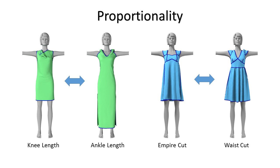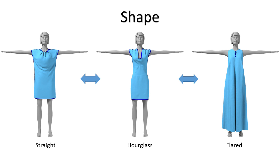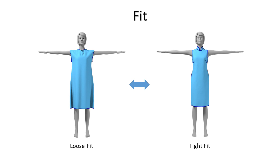Proportionality describes the relative location of garment elements such as seams or hems with respect to the wearer's body. Shape encodes normal orientation across the garment surface, and fit encodes the distance between the garment and the wearer's body.